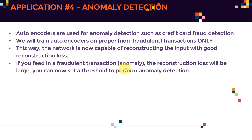The location is different, the amount is different. When we feed in this fraudulent transaction, the reconstruction loss of the autoencoder will be very large. We can set a threshold: if the reconstruction loss exceeds a certain number, we flag it as a fraudulent transaction and block the credit card.